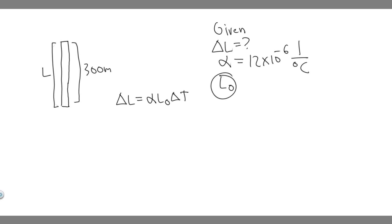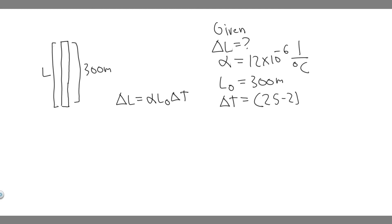The initial length is going to be 300 meters, because that's how long it is as they tell us in the beginning. Then we find the change in temperature. They're telling us from an average temperature of 2 degrees Celsius to an average temperature of 25 degrees Celsius. So the change is going to be 25 minus 2 — the final minus the initial — which is 23 degrees Celsius.